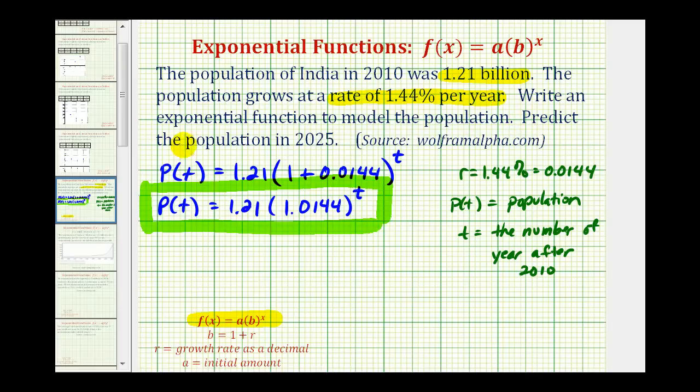To predict the population in the year 2025, we need to determine what value of t to use. t is not going to be equal to 2025, because t equals 0 represents the base year of 2010. So for the year 2025, t is going to equal 2025 minus the base year of 2010. So t is equal to 15.